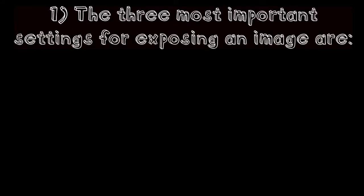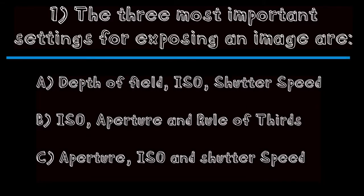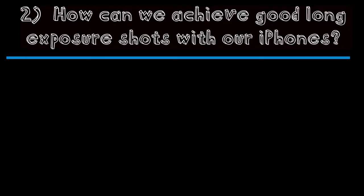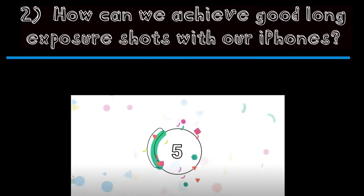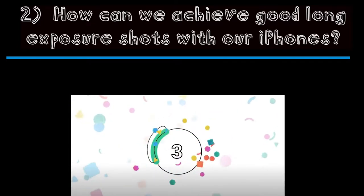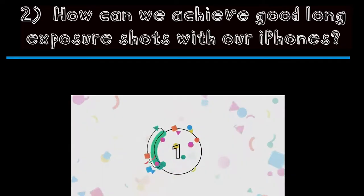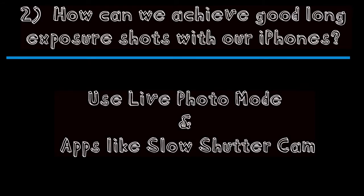Question one: the three most important settings for exposing an image are — a) depth of field, ISO, and shutter speed; b) ISO, aperture, and rule of thirds; or c) aperture, ISO, and shutter speed? The correct answer was c — aperture, ISO, and shutter speed. The correct answer for question two is to use live photo mode and apps like Slow Shutter Cam.